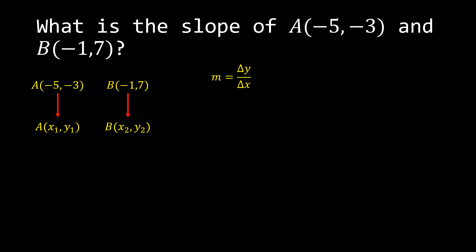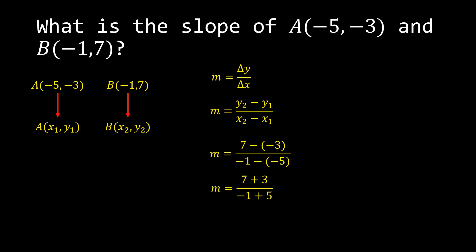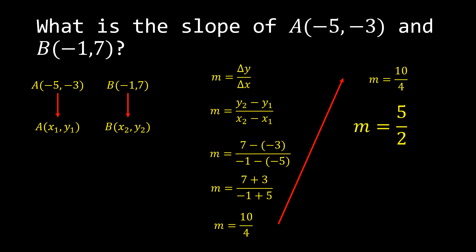So m is equal once again to change in y over change in x, therefore y sub 2 minus y sub 1 over x sub 2 minus x sub 1. Substituting, we have 7 minus negative 3 all over negative 1 minus negative 5, which simplifies to 7 plus 3 all over negative 1 plus 5, giving us 10 over 4, which is still 5 halves.